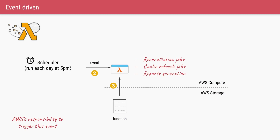For example, if you have a task — like data reconciliation, cache refresh, or report generation — that needs to run once a day at 5 PM, instead of running a Spring Boot application with cron scheduling 24/7 just for that one task, you can use AWS Lambda. AWS provides a scheduler where you configure an event at 5 PM tied to your function. Every day at 5 PM the event triggers, the function is deployed on demand, and once the task is done the function is destroyed — you pay only for 5–10 minutes of runtime.